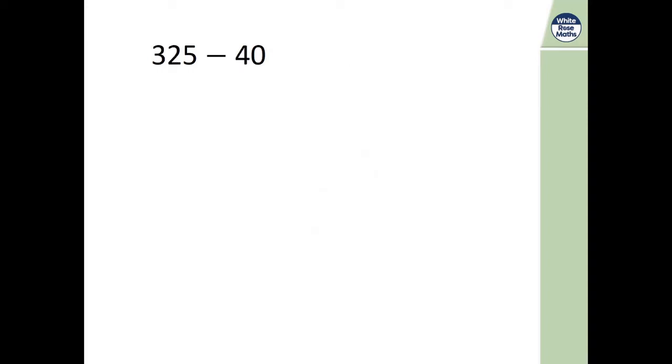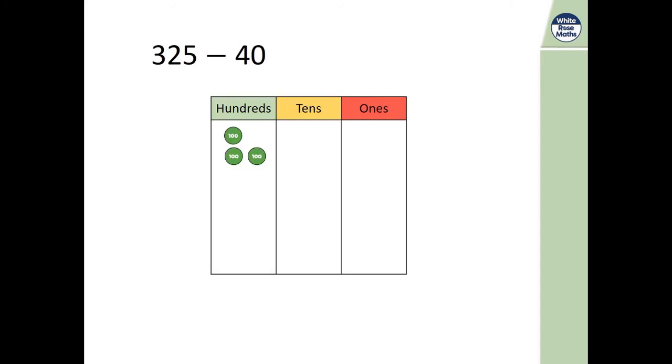Now here's one for you to try. Pause here and have a think. Remember you can build or draw base 10 or place value counters to help you. How did you get on? Here's our 325. We need to subtract 4 10s. We only have 2 here so we need to exchange 1 of our 100s for 10 10s. Let's do that now. And now we can subtract our 4 10s. Can you see what's left? We have 2 100s, 8 10s and 5 1s. So it's 285. Is that what you thought too?